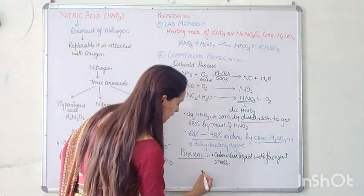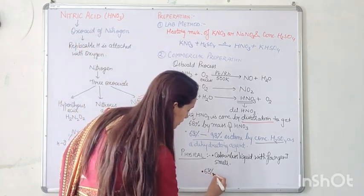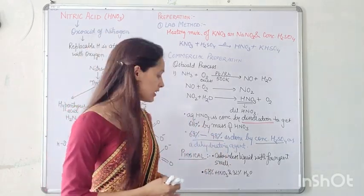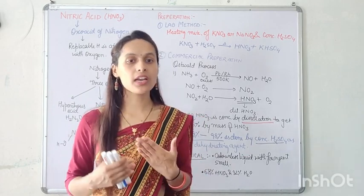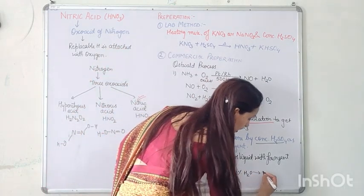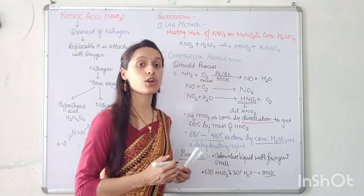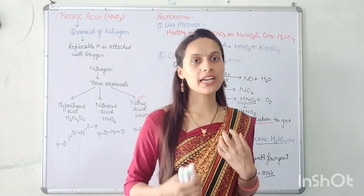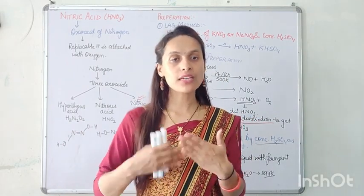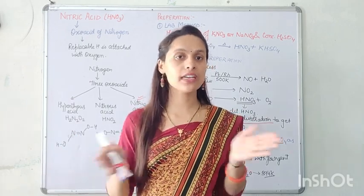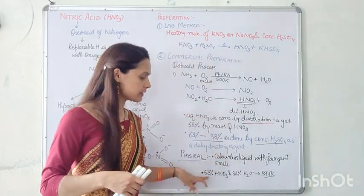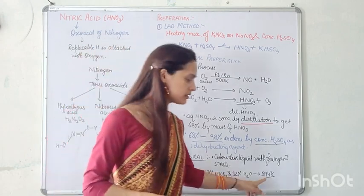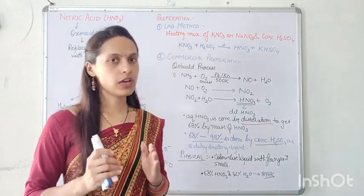The second physical property: in the lab, 68% HNO3 and 32% water form an azeotropic mixture at 394 Kelvin. Azeotropic mixtures are mixtures which boil like a pure liquid. In a normal mixture, each component has specific volatility and different components form vapors at different speeds, but at 394 K, this mixture behaves as an azeotropic mixture.